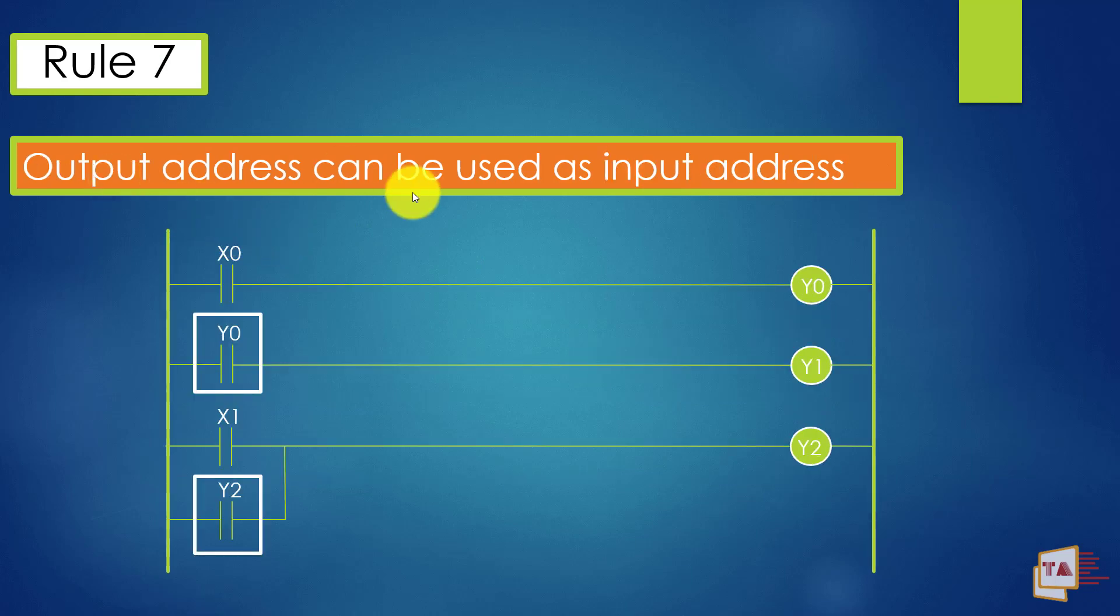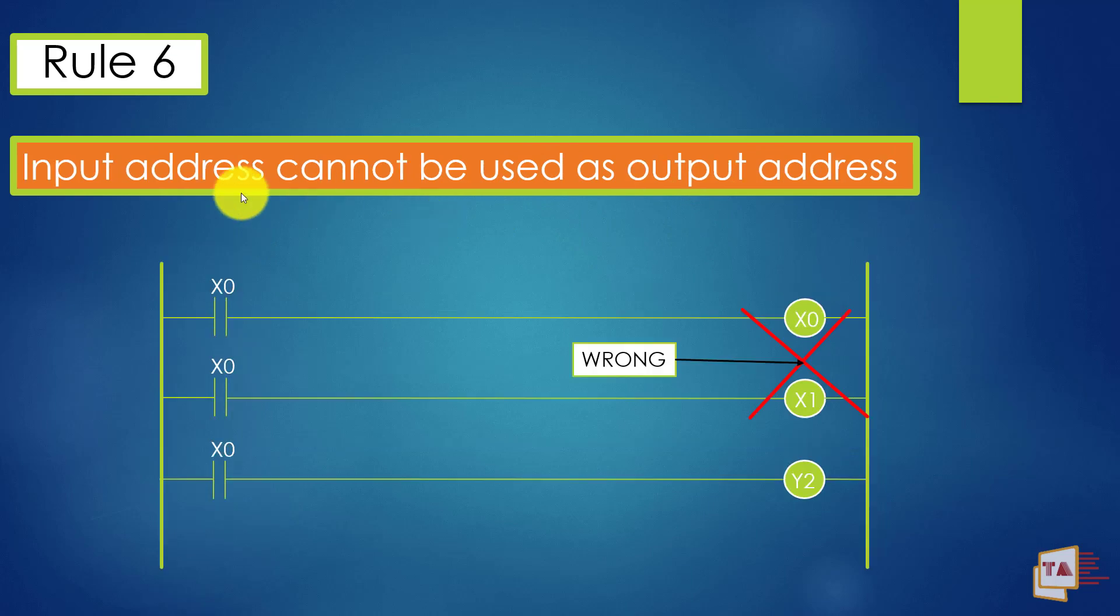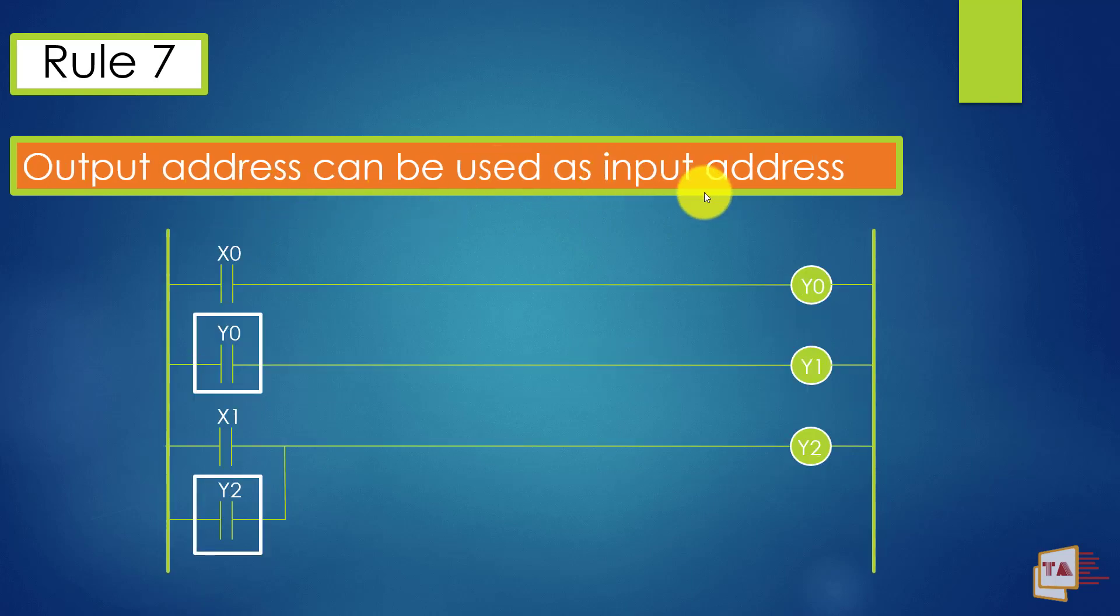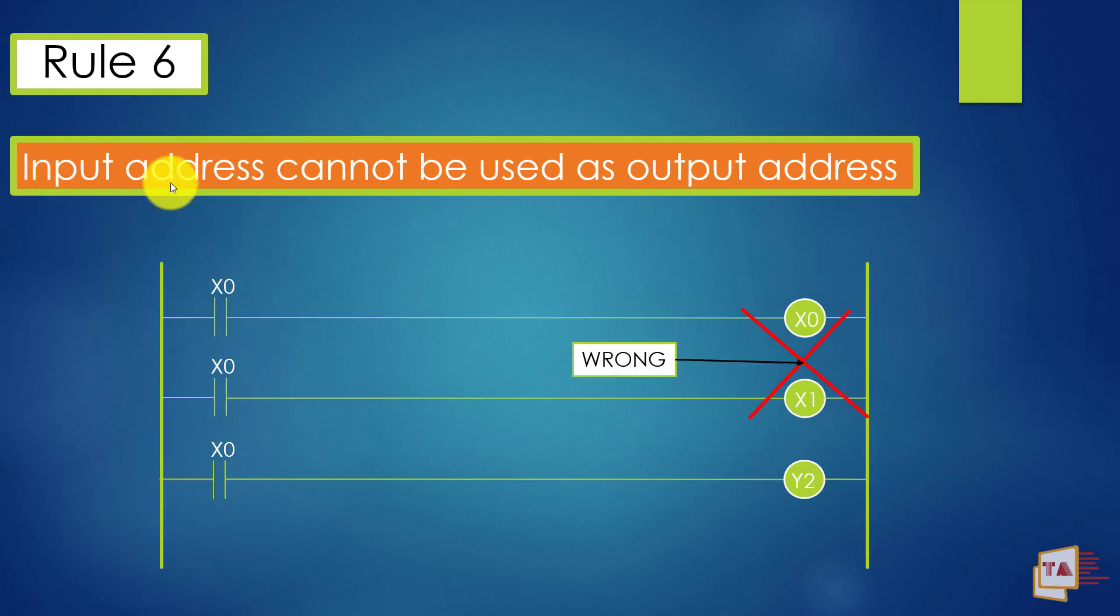Next is output address can be used as input address. See here, in the previous rule, we saw input address cannot be used as output address, but here output address can be used as input address. We have some logic. I just want to turn on Y1 after Y0 is getting turned on. So for that I'm giving the input name like Y0. So here I'm using the output name in input. This is also one of the rule. You can use the output address as an input address, but you cannot use input address as output address.